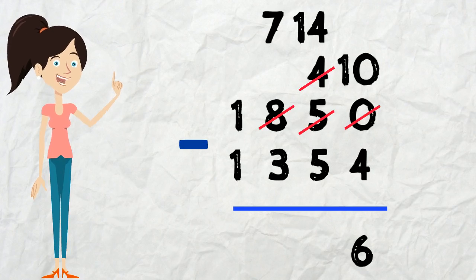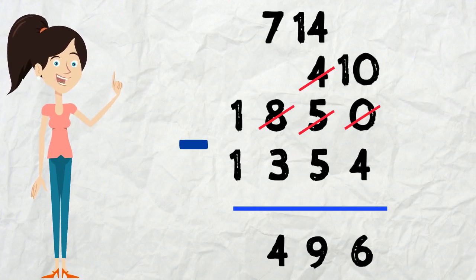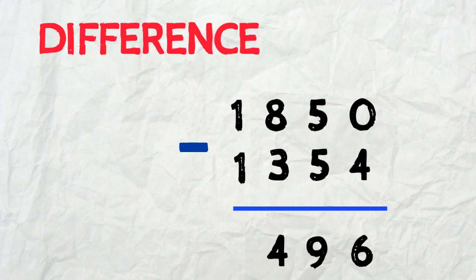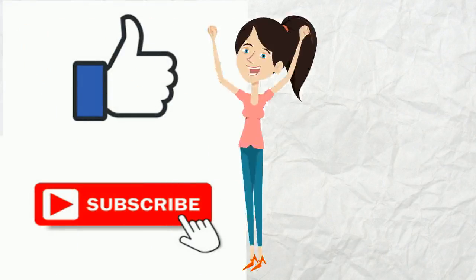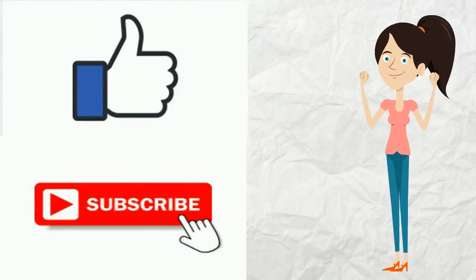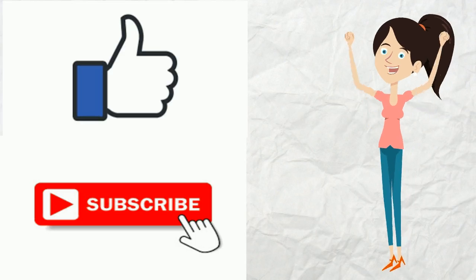In the tens place: we now have 4 take away 5 — we need to borrow again; the 8 in hundreds becomes 7 and 4 becomes 14, so 14 take away 5 equals 9. Then hundreds: 7 take away 3 equals 4. Then thousands: 1 take away 1 equals 0, which we don't need to show. So the difference between 1,850 and 1,354 is 496. If you enjoyed this video or learned something new, please don't forget to like and subscribe to our channel!